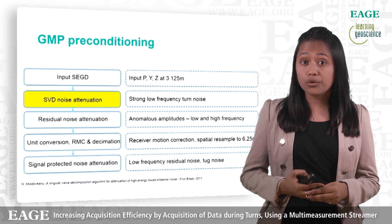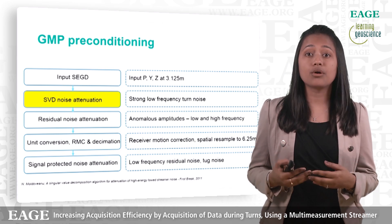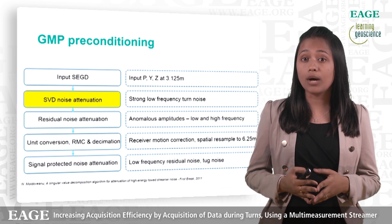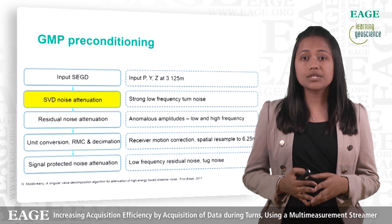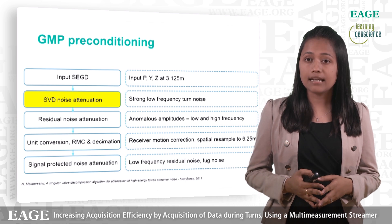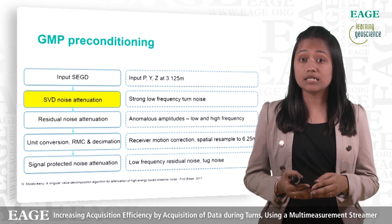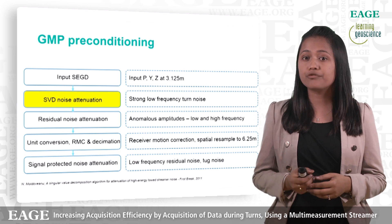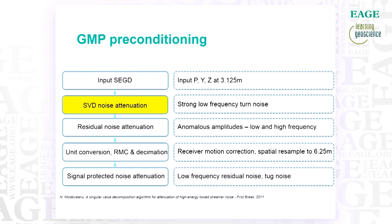Due to the very severe levels of cross-flow noise remnant after the acquisition data conditioning, we had to apply additional noise attenuation in the form of singular value decomposition or SVD noise attenuation. This method was presented by Moldevanu in 2011 and proved to be very successful in the attenuation of this cross-flow noise experienced during the turns on hydrophone-only data and has become a standard processing step for all acquisition in turns. Hence, it was relatively straightforward for us to take the flow and adapt it to the multi-measurement data.